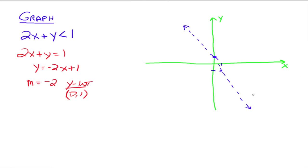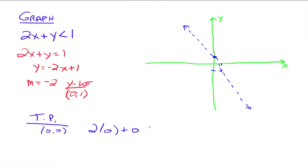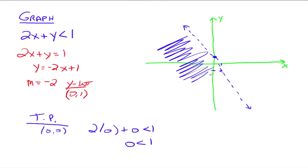Now we need a test point. The origin is clearly not on our line and is below it, so we take (0, 0). Substituting into the original inequality: 2 times 0 plus 0 is less than 1, so 0 is less than 1 — that is true. We shade the side that's true, which is the side our test point was on.